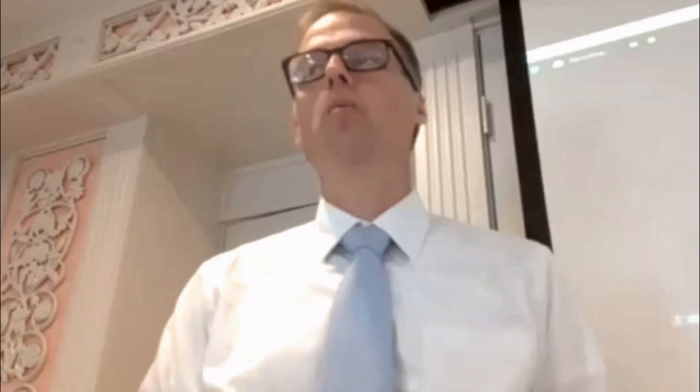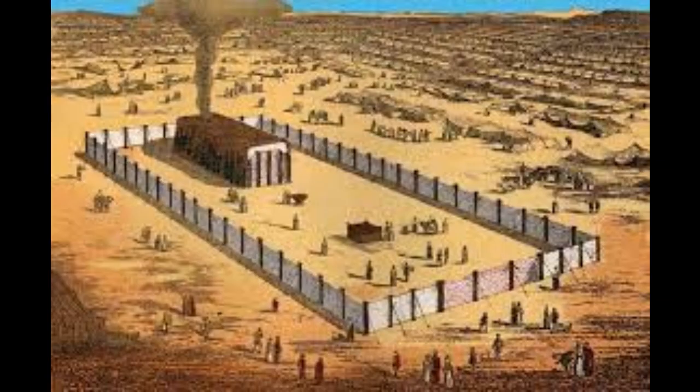Revelation 3:8 says, 'I know thy works. Behold, I've set before thee an open door no man can shut. Thou hast a little strength and hast kept my word and hast not denied my name.' God is speaking here — red letters. I have set before thee an open door and no man can shut it. This door to the sanctuary is an open door. God has opened a door that no man can shut for you.